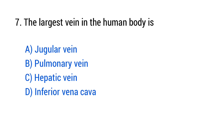Question number 7. The largest vein in the human body is — the right answer is option D, inferior vena cava.